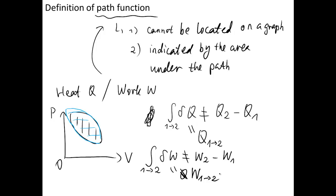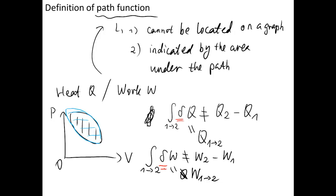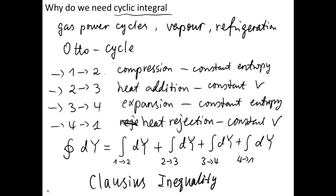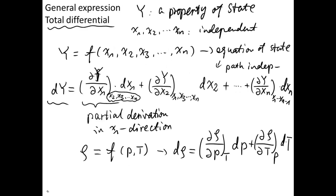You may notice that I use δ (delta) instead of d here. That is because d indicates an exact differential, whereas δ is used to indicate an inexact differential. This is the key difference in notation between point functions and path functions.